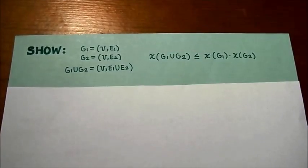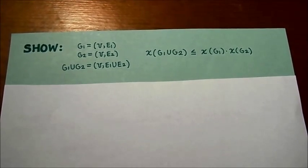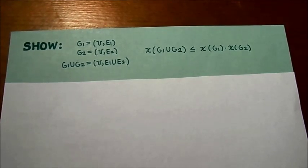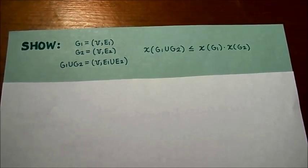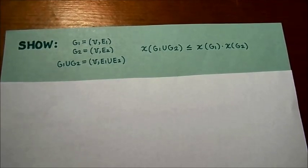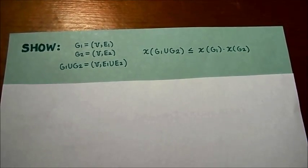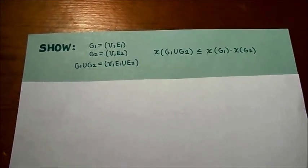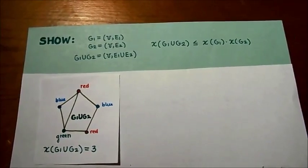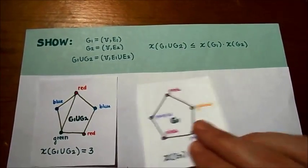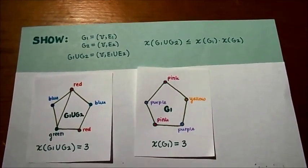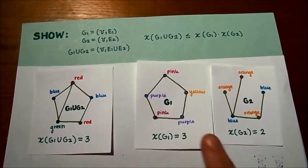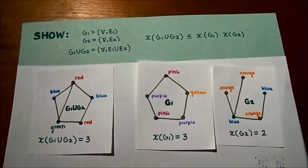Now we would like to show that given any two graphs G1 and G2 and the union graph G1 union G2, the minimum number of colors required to color the union graph is always less than or equal to the product of the colors required for the other two graphs. For our example, the minimum colors for the union graph was three, and the minimum colors for G1 and G2 have a product of six. Three is less than six, so it works for our example, but we would like to show it works in general.